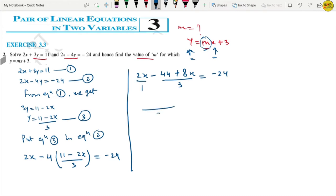What are we going to do here? 2x minus 44 minus minus plus, 4 times 8x upon 3 equals to minus 24. Now here 1 is, so let's take the 3. So what do we get? 6x minus 44 plus 8x equals to minus 24 times 3. There should not be any doubt here.